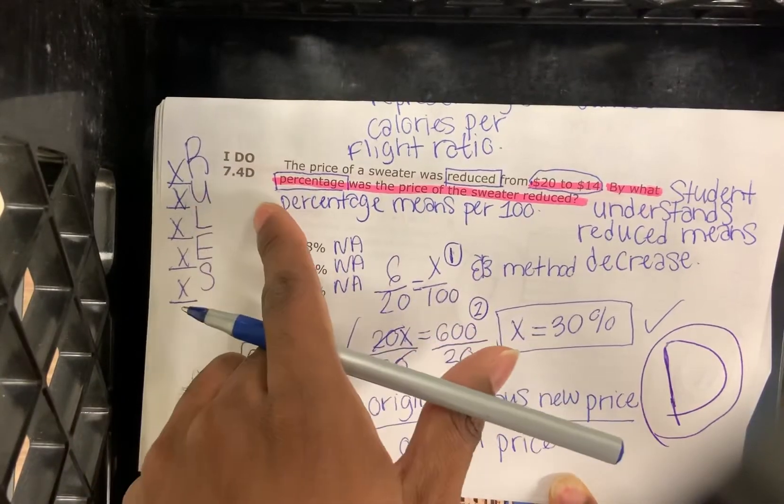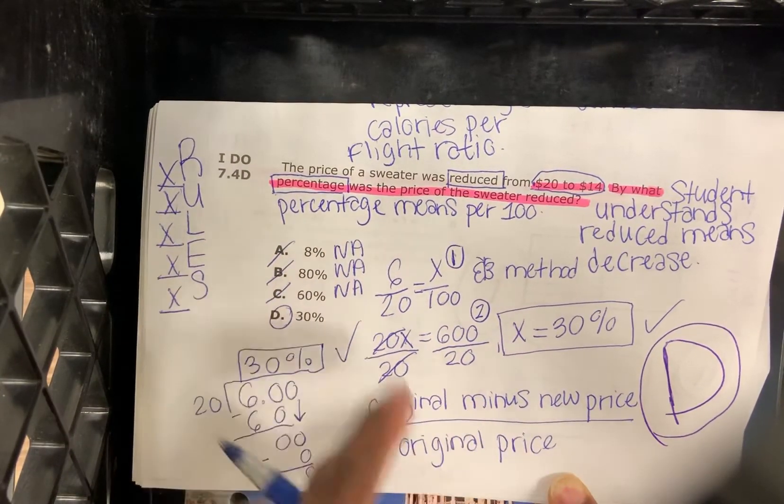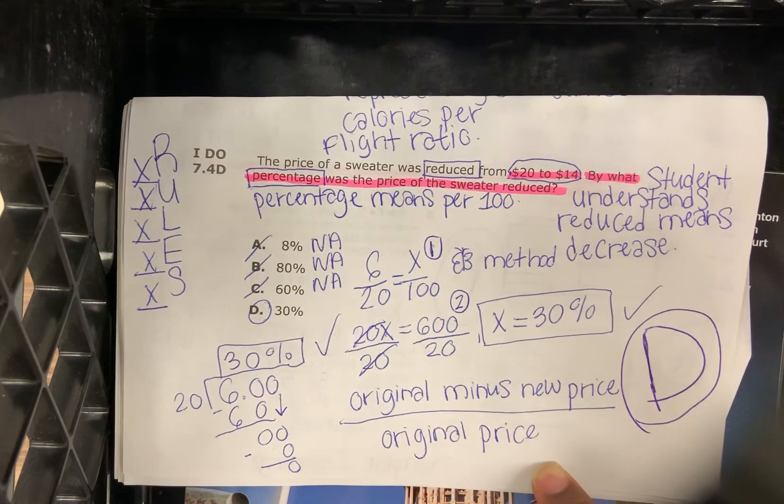We read the word problem, underlined the question, labeled, eliminated the incorrect answers, and selected the correct answer. Hope this video helps. Thank you all for watching. I'll see you in the next video.